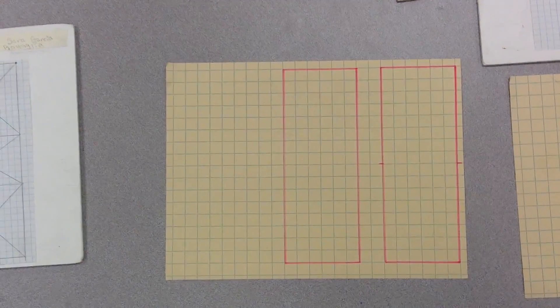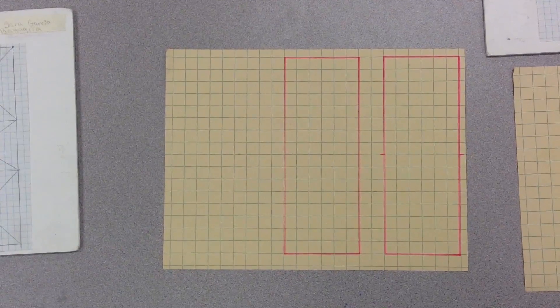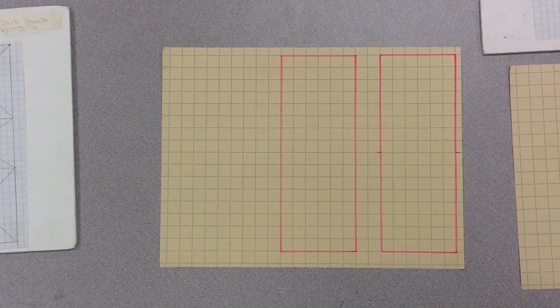After you've decided what type of graph paper to use, you'll end up making your rectangles. You can see that I've started drawing my two rectangles here, 8 inches tall and 3 inches wide.